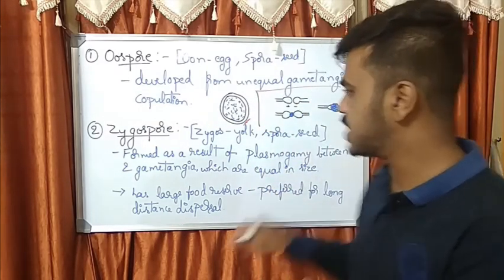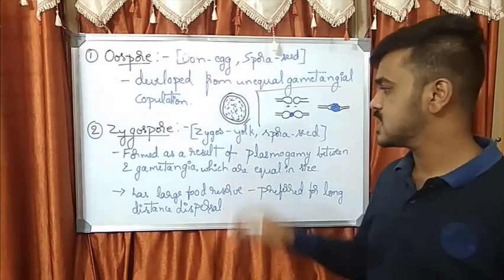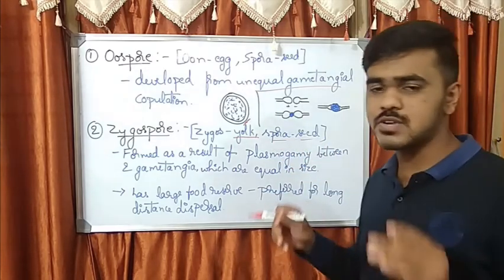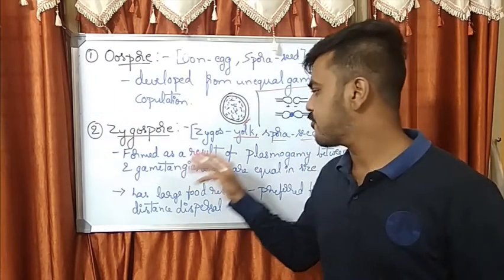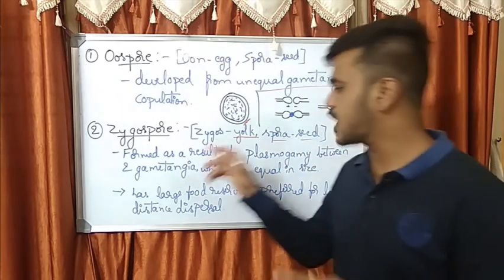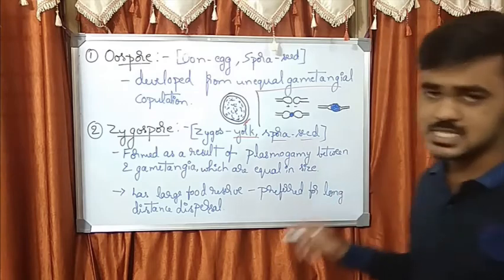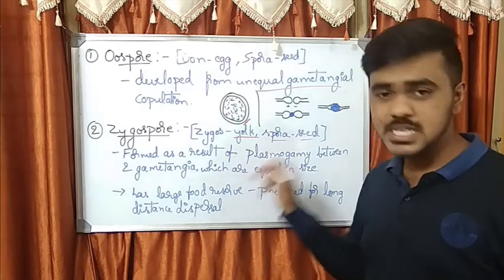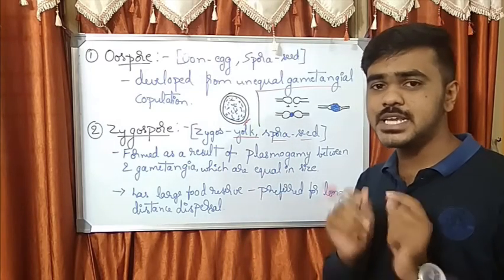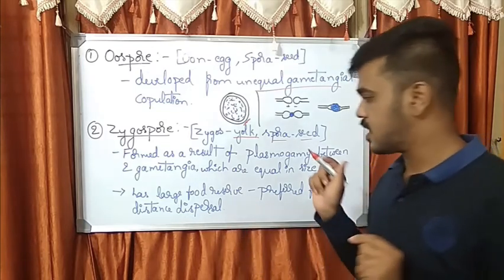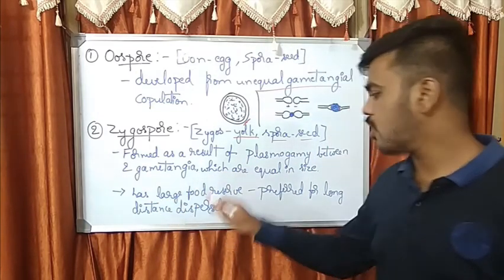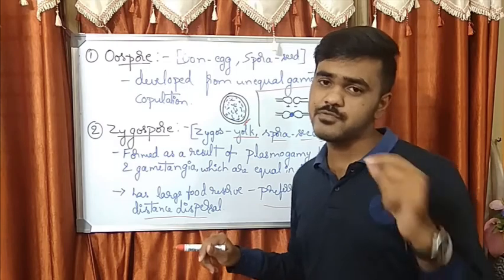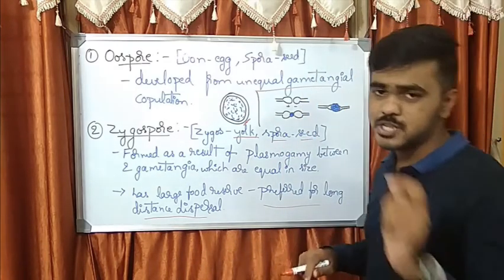Next is zygospore. Zygo means yolk and spora means seed - a yolk-like seed, you can call it. It is formed as a result of plasmogamy between two gametangia which are equal in size. Remember, it is also a result of gametangial copulation, but here gametangial copulation will be in isogamous condition. It has a large food reserve and is preferred for long distance dispersal.